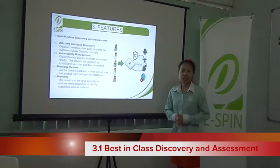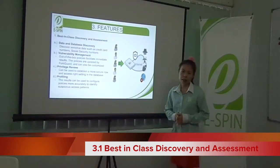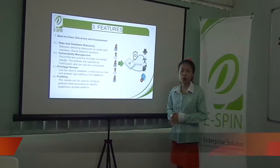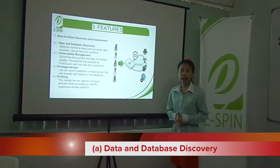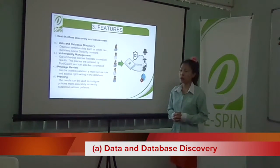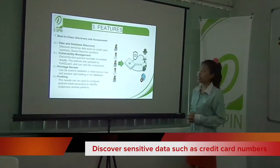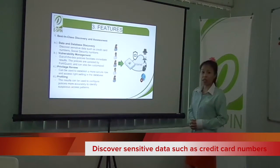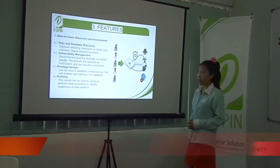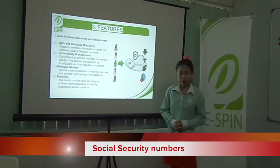We start with number one: Best in Class Discovery and Assessment. There are four things we have to know. First is Data and Database Discovery — discover sensitive data such as credit card numbers and social security numbers.